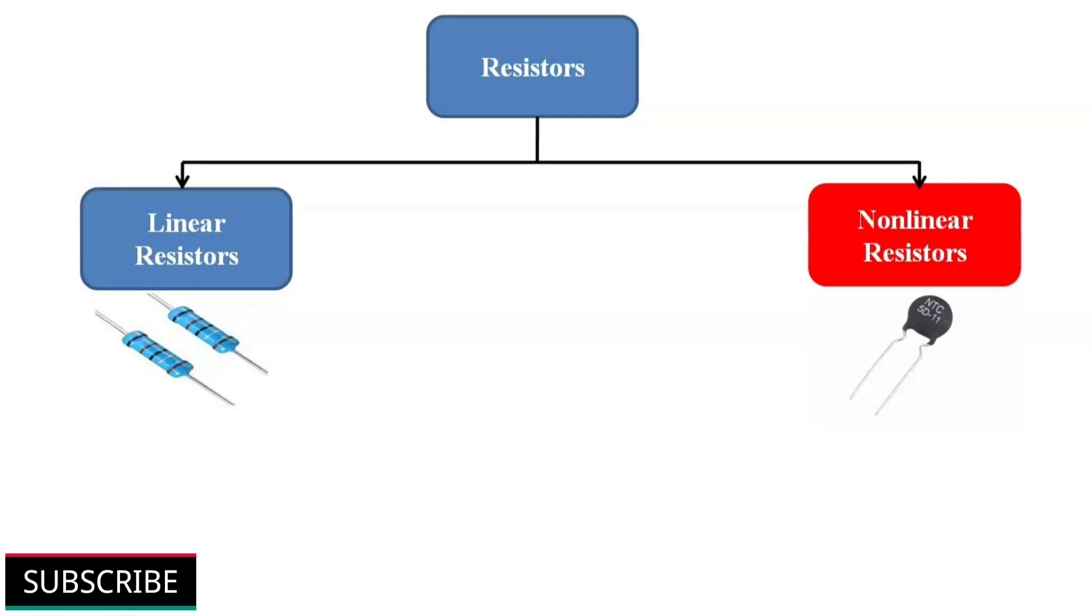Linear resistors are those resistors in which their current value is directly proportional to the applied voltage. Their VI characteristic curve is a straight line or linear.